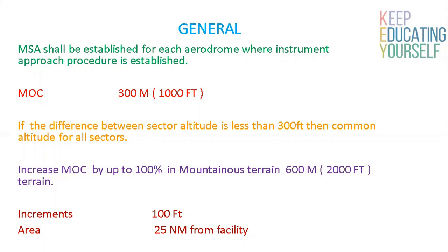Obstacles within a buffer zone of 5 nm around the boundaries of any given sector shall be considered as well. If such obstacles are higher than the highest obstacle within the sector, then the Minimum Sector Altitude shall be calculated by taking the highest elevation in the buffer area concerned, adding a clearance of at least 1000 feet and rounding the result up to the next nearest 100 feet.